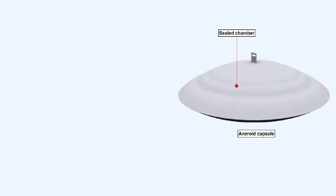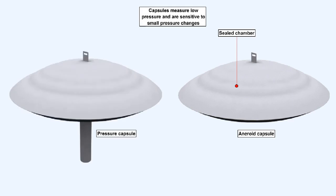Capsules are made up of two diaphragms, placed together and joined at their edges to form a chamber. The chamber may be sealed, in which case the device is called an aneroid capsule, or it may be joined to a pressure source, in which case it's called a pressure capsule. Like diaphragms, capsules are also used to measure low pressure, but capsules are more sensitive to small pressure changes.